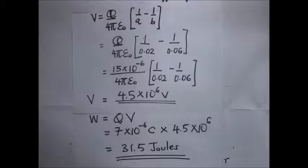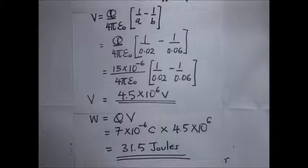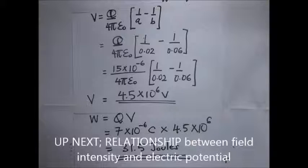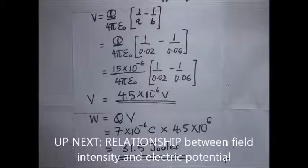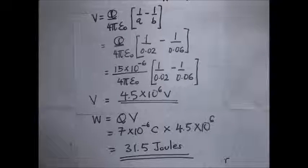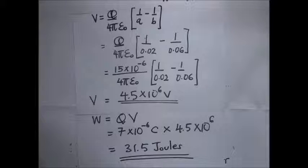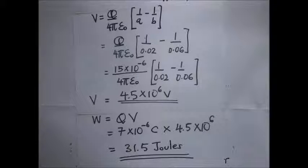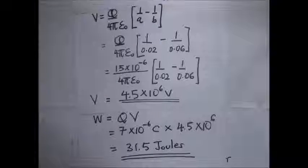31.5 joules — that is the work done in moving the 7 microcoulombs from 6 centimeters to 2 centimeters. That brings us to the end of our worked example. Please subscribe to this channel if you want more videos, and share the video for the benefit of your colleagues. Thanks for watching — hope to catch you in the next tutorial. For Kisembo Academy, this is Old Ranga Kuramia.